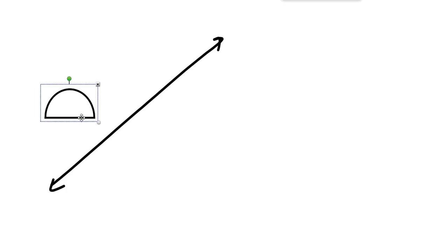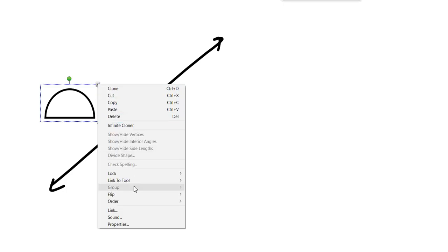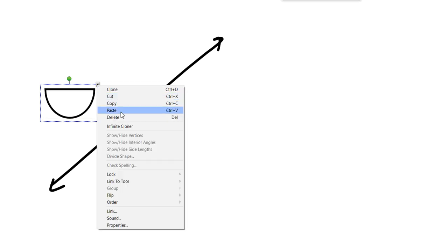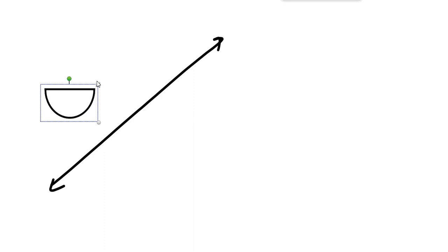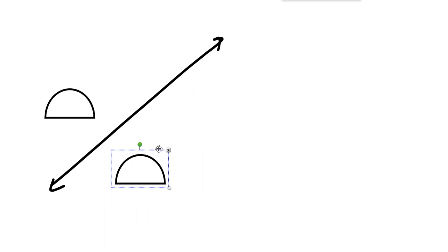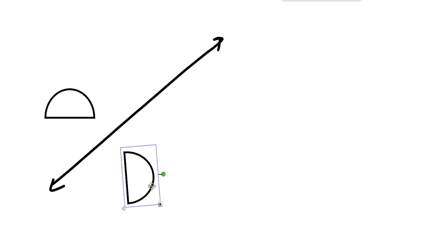So there's a line. You have some object — let's do this object. You want to take this object and you want to reflect it. Let's clone it. You want to reflect it in the reflection line, right? So that these are mirror images.